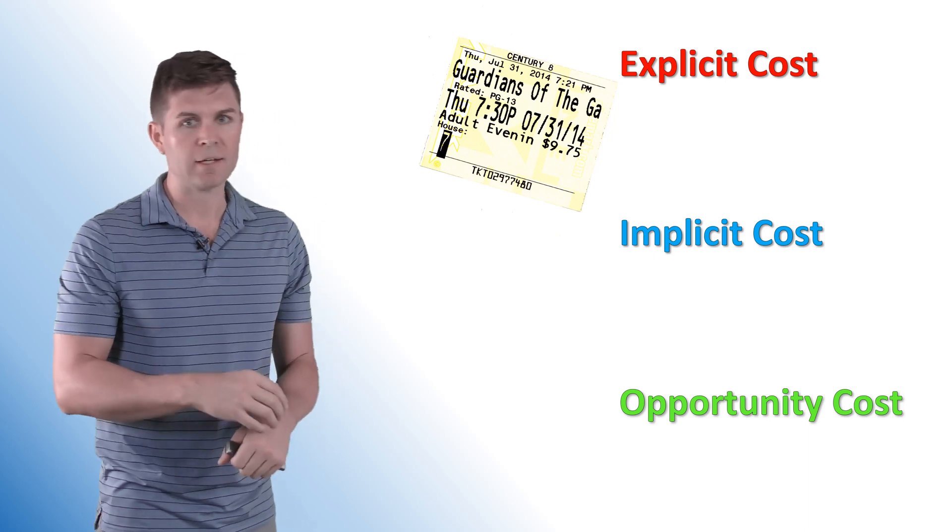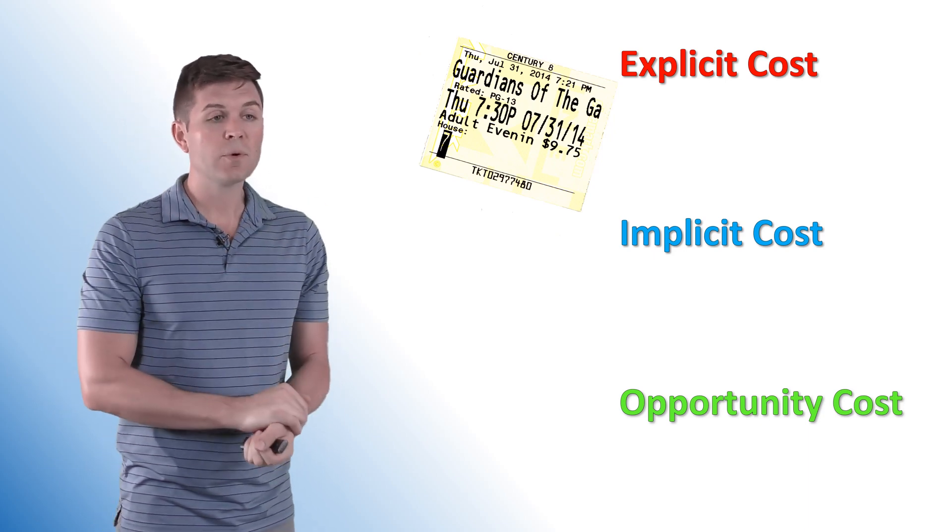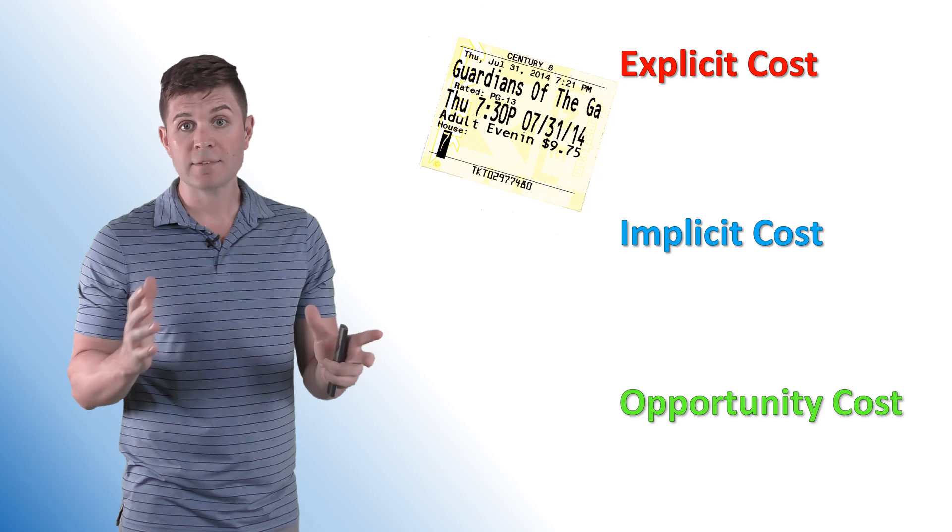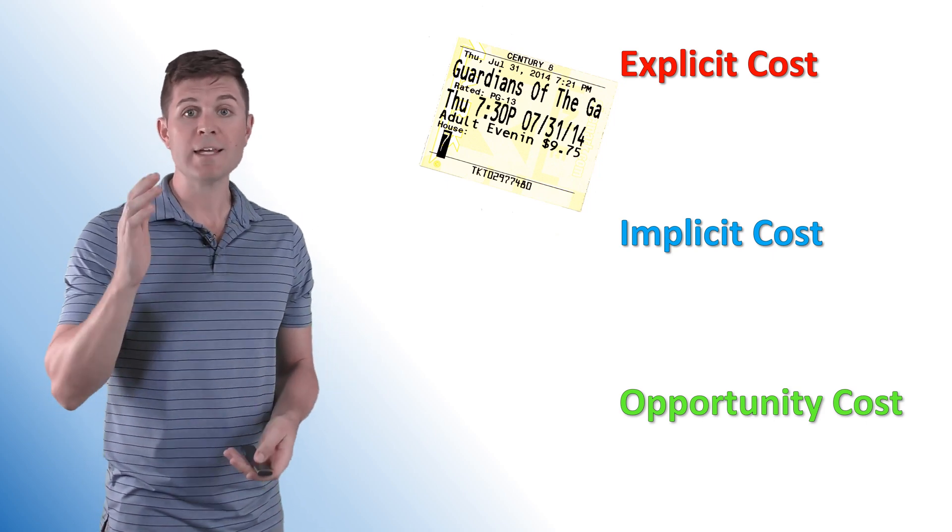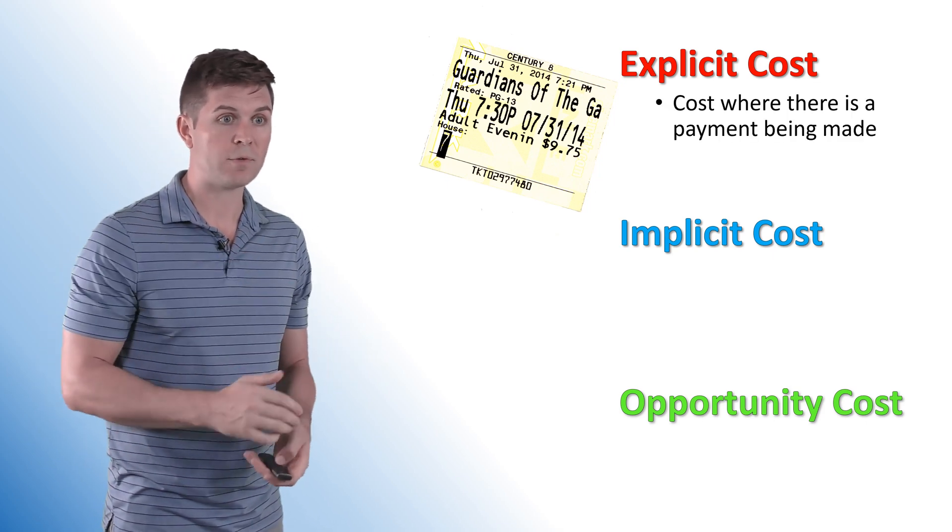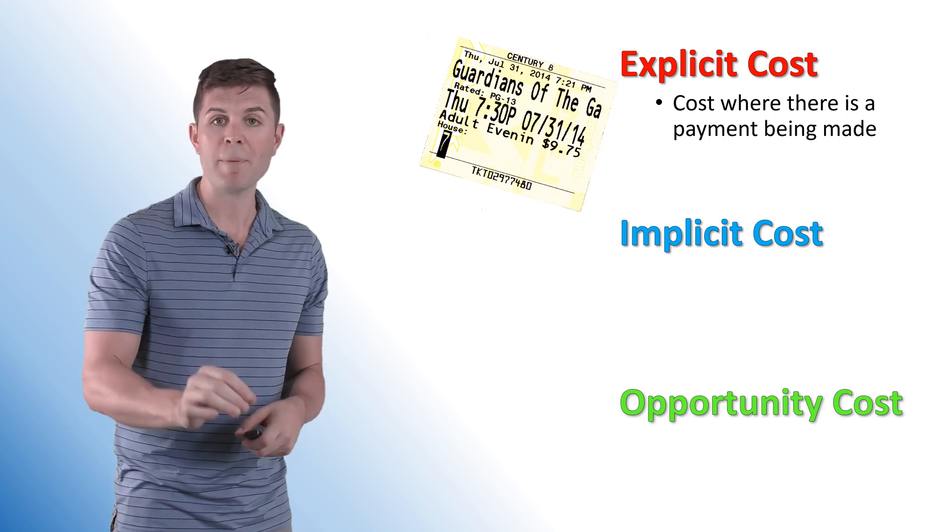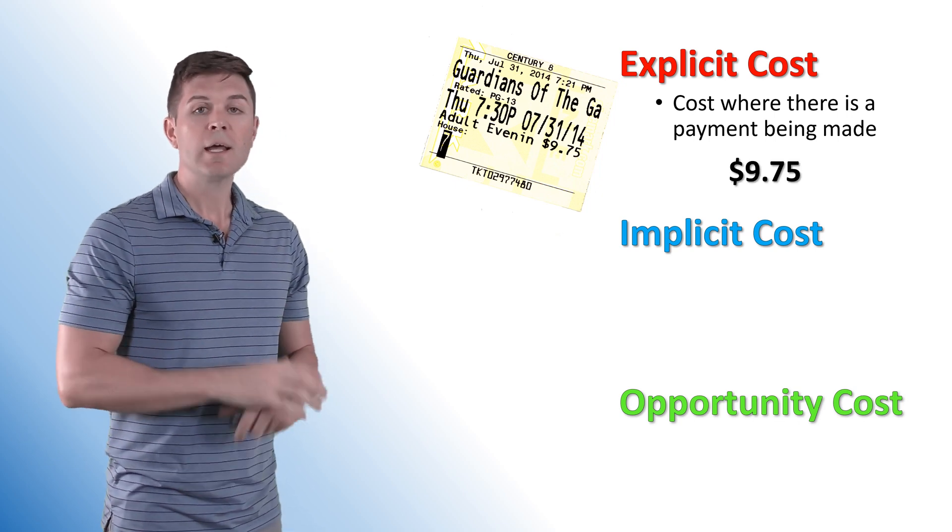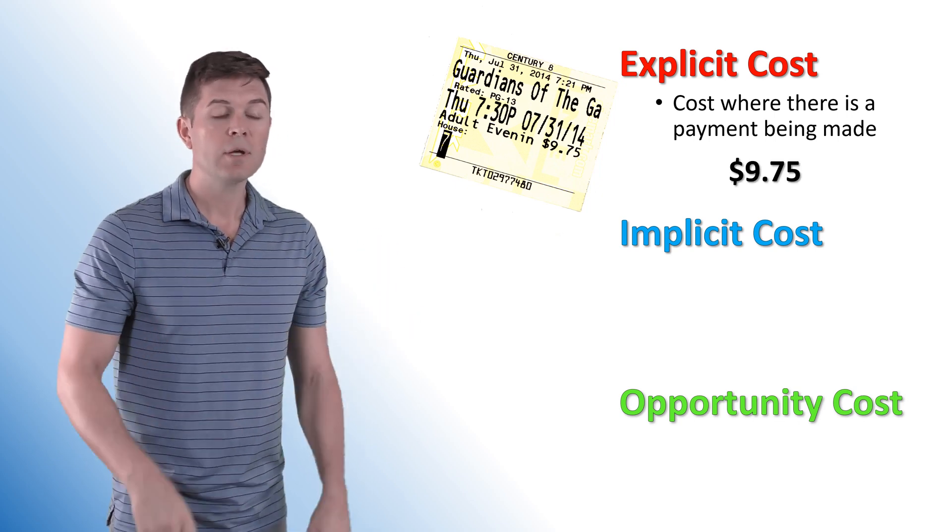So I'm going to give you an example. I go to the movies. Let's say it's Guardians of the Galaxy. I know it's a few years old, but still a great movie. This ticket, $9.75 is what it cost me. That is the explicit cost of my trip to the movie theater. So it's a cost where there is a payment being made. In this case, $9.75.